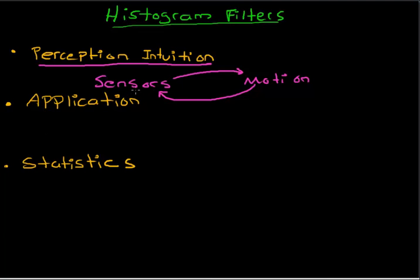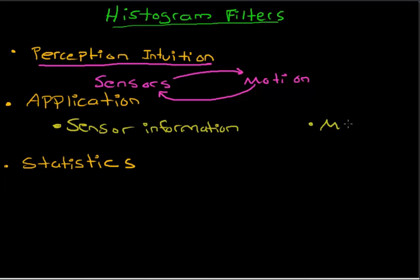The application that bridges sensors and motion is going to be filled in by the histogram filter. The histogram filter will periodically take in sensor information and also move the robot. We take sensor information at periodic times and we're also able to move the robot around, and we use these two inputs — applying statistics to them — to be able to localize the robot.